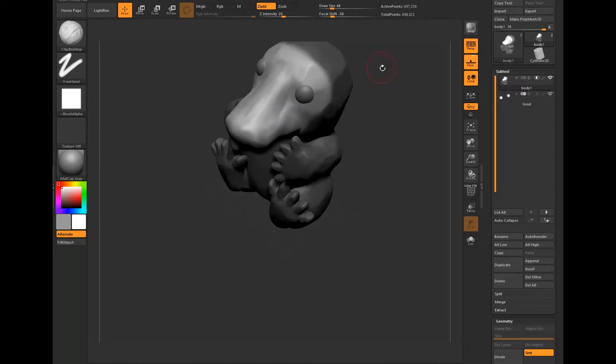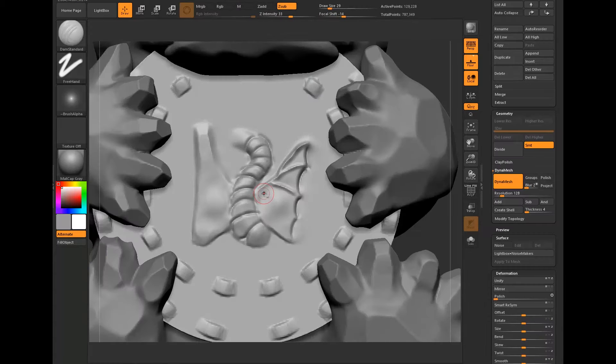I created the model in ZBrush. If you've seen Fantastic Beasts and Where to Find Them, you know Niffler loves shiny things, especially money, so I sculpted him holding a galleon, which is a currency from the Harry Potter universe.